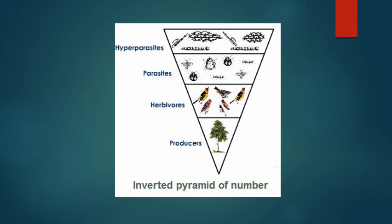Each bird is a host for various parasites — the secondary consumers — which further support a large number of hyperparasites, the tertiary consumers. So children, these were the three types of pyramid of numbers.